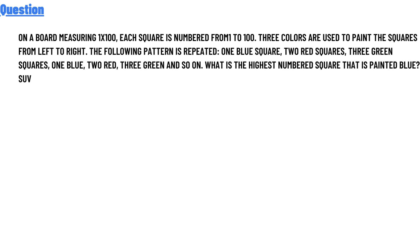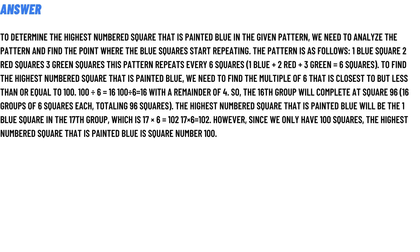The question is: what is the highest-numbered square that is painted blue? To determine this, we need to analyze the pattern and find the point where the blue squares repeat. The pattern is: one blue square, two red squares, three green squares. This pattern repeats every six squares — one blue plus two red plus three green equals six squares.